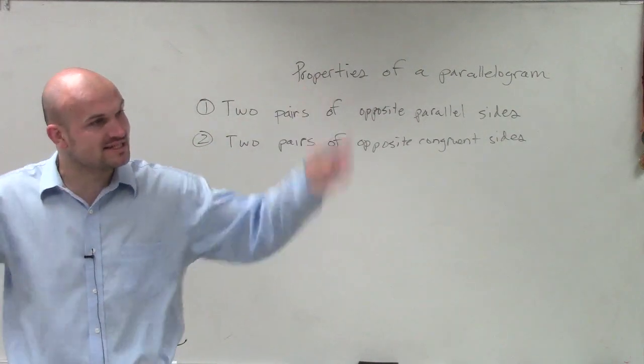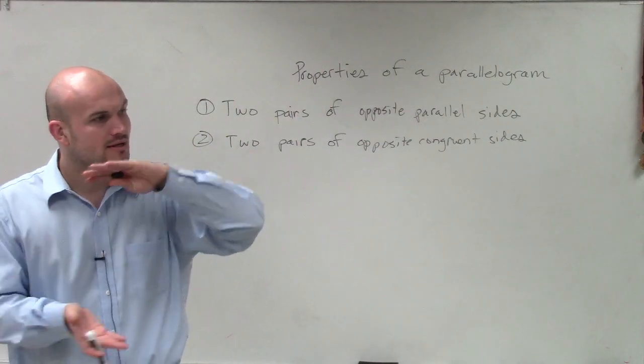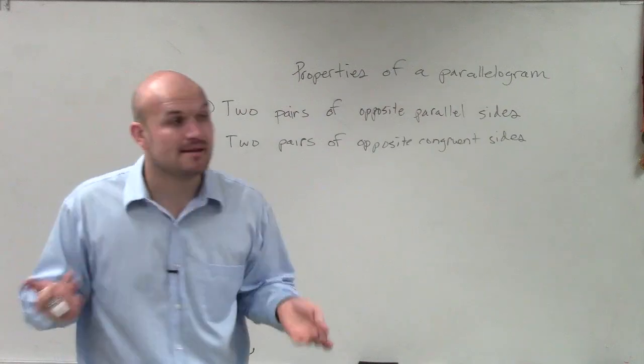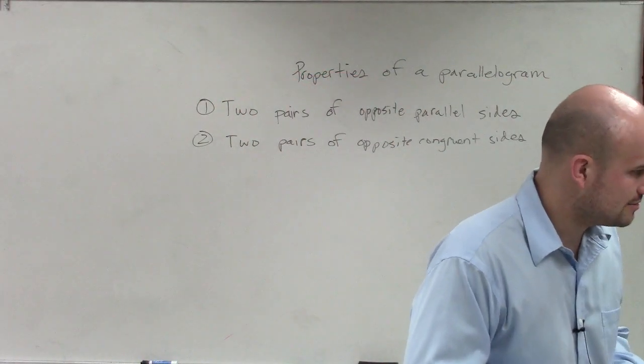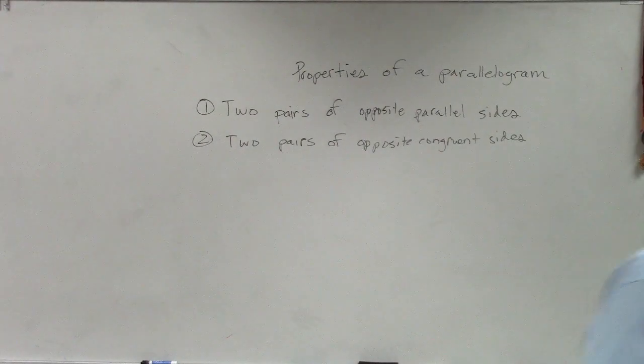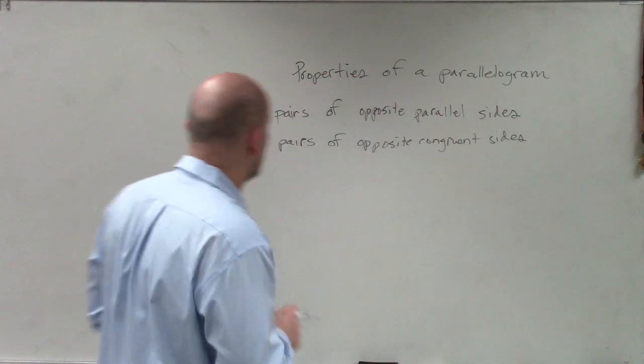So you can apply the distance formula to opposite sides. If you can find that the distances of two opposite sides are congruent, that means the same measurement, then you can prove that they're congruent. So you need to be writing this down right now.